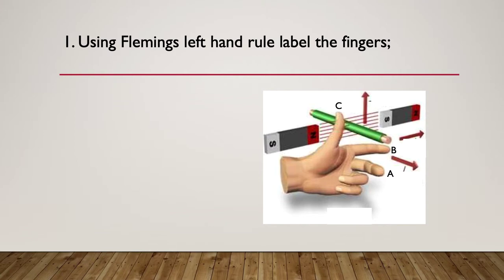So here is question one. Using Fleming's left hand rule, see if you can label the fingers. So the fingers are labeled A, B and C. See if you can label what they represent.